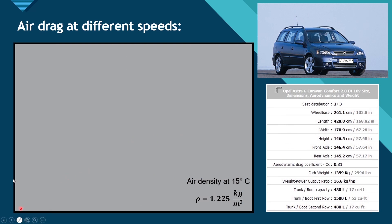Now I would advise you to bring out a paper or notebook and follow along with this calculation. We are going to calculate the force of air drag at four different speeds for my car — an Opel/Vauxhall Astra G, also known as Astra Mark 4. The specs needed for this exercise are from a website linked in the resource section of this lesson. You can also search your own car model on that website to pull out the information.